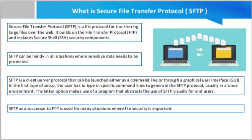For example, trade secrets may not be covered by any particular data privacy rule, but it can be devastating for them to fall into the wrong hands. So a business might use SFTP to transmit files containing trade secrets or other similar information. A private user may also want to encrypt their communications.